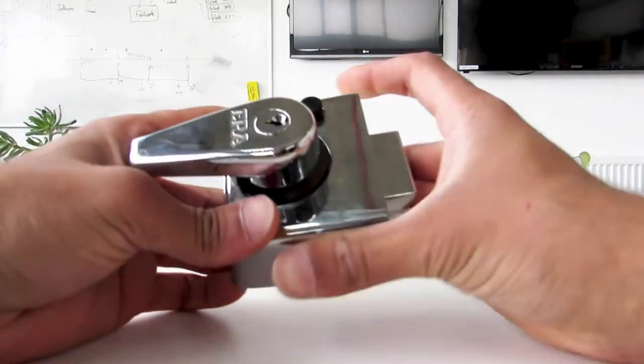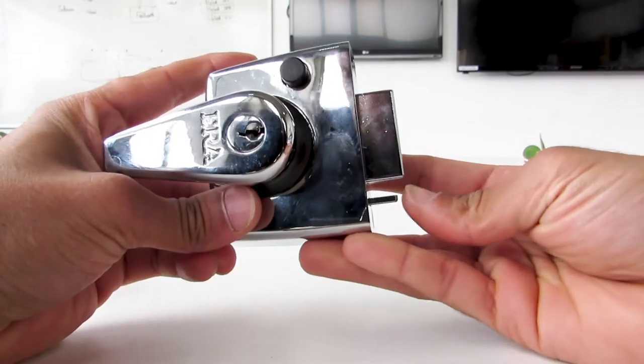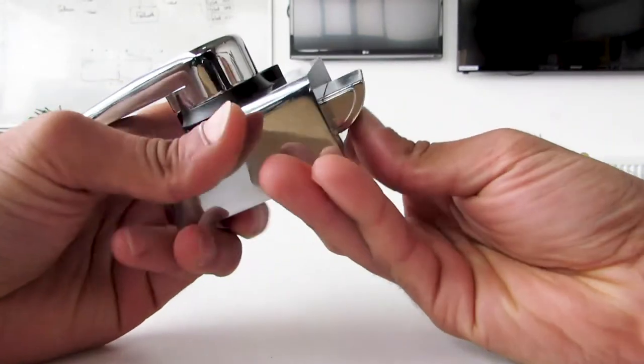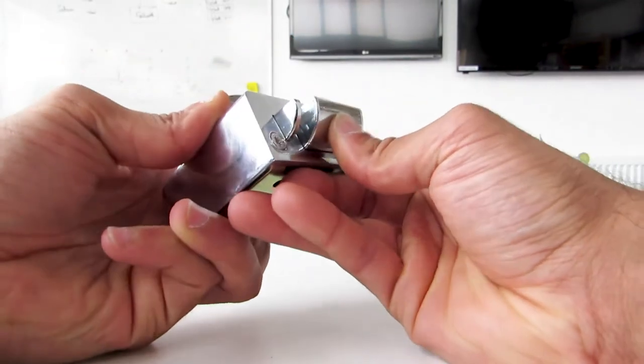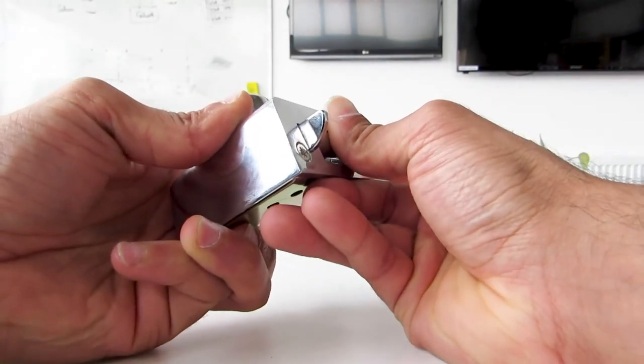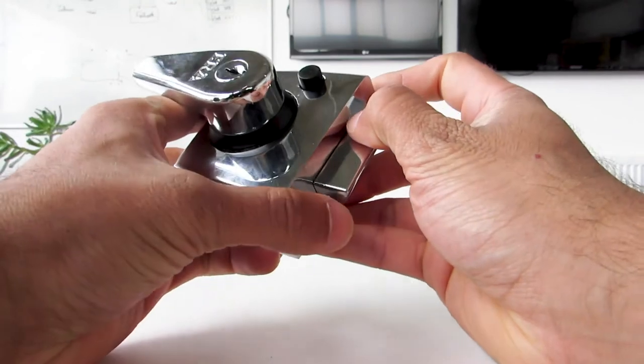Now with a deadlatching night latch this issue does not exist because of this additional snib. So you can see when the snib is not depressed I'm able to exhibit a similar horizontal force to withdraw the latch.